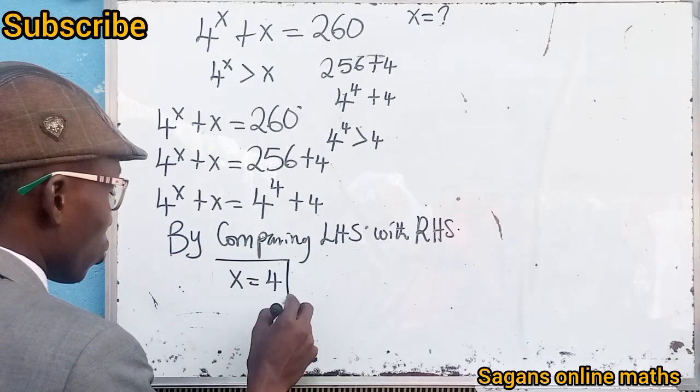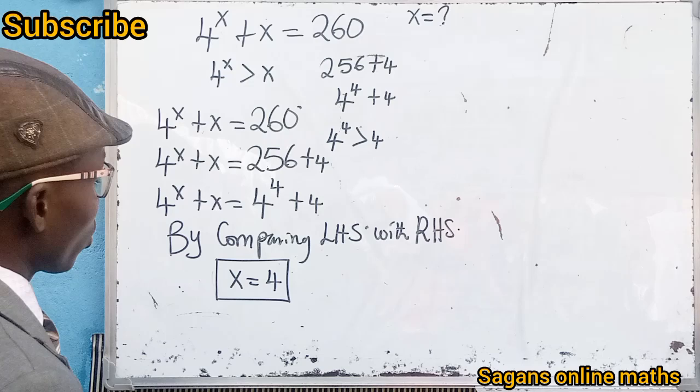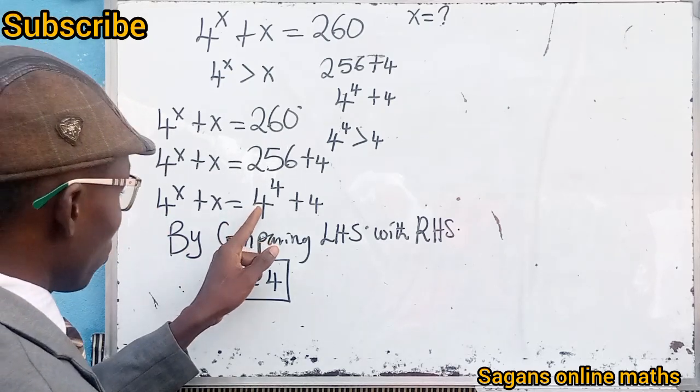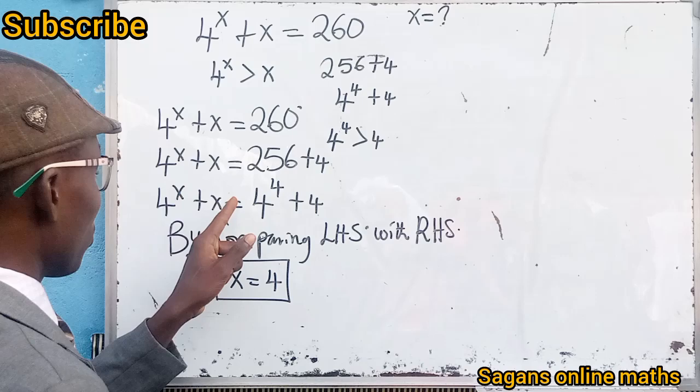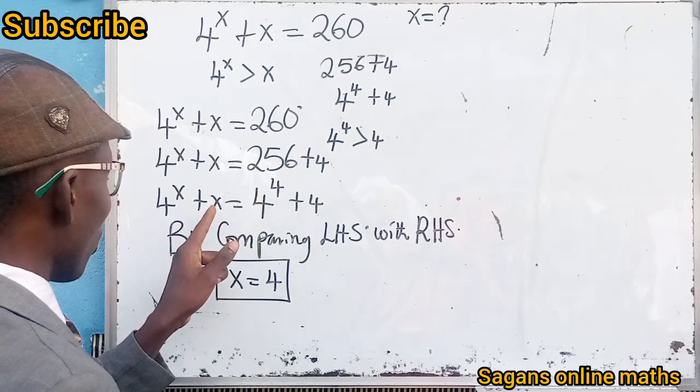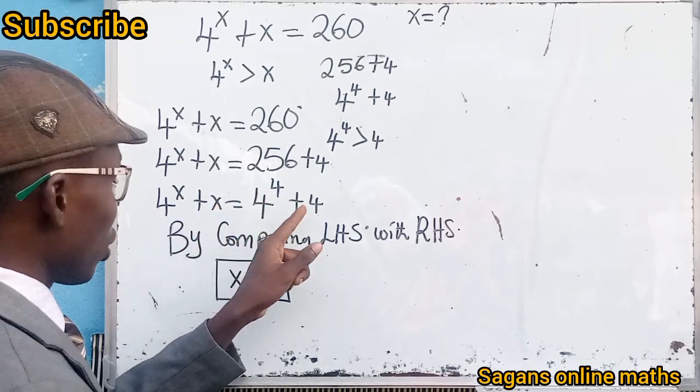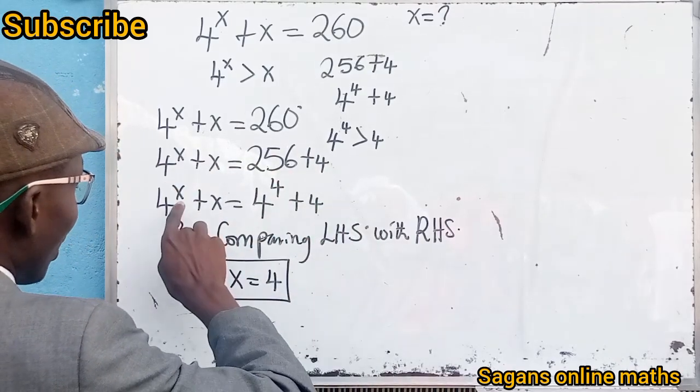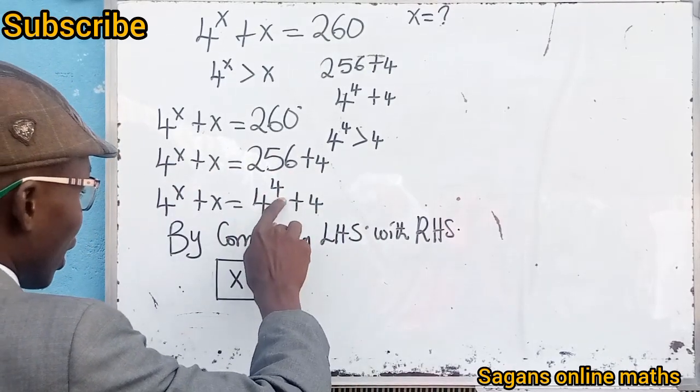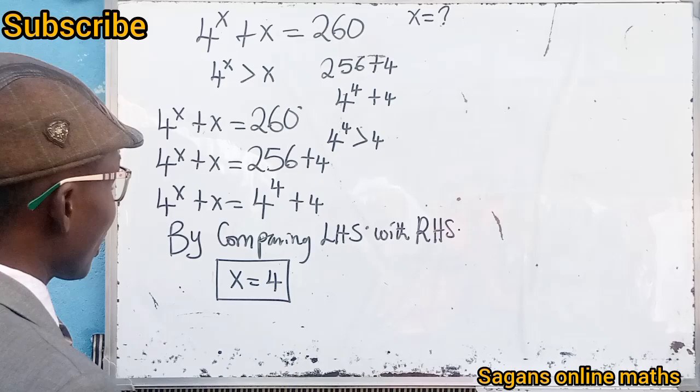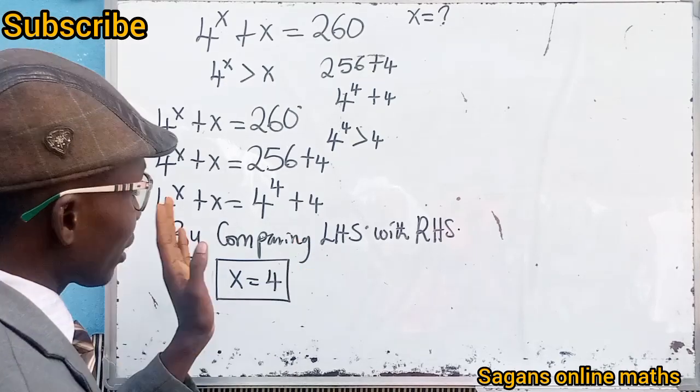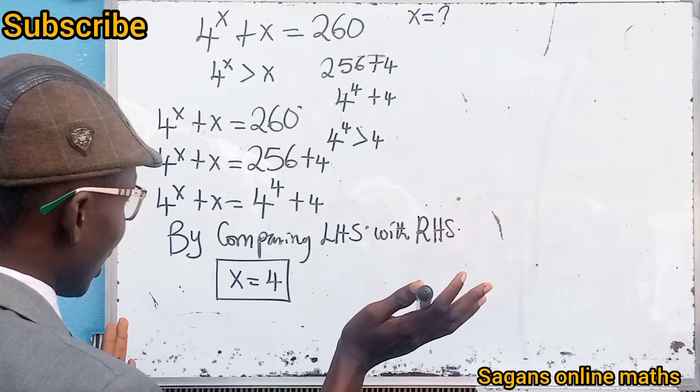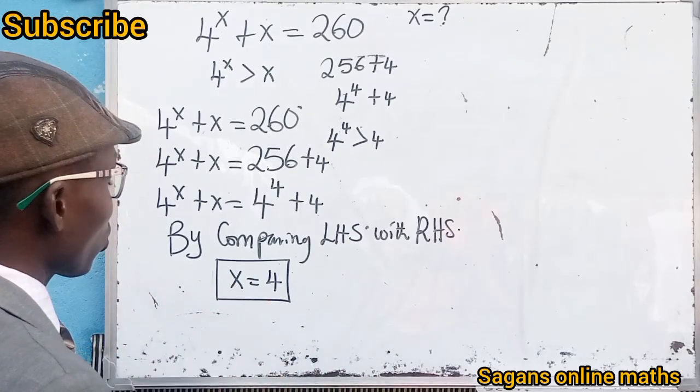Since the base here is 4 and the base here is 4, the exponent here is x and the exponent here is 4. So looking at this problem, you will know that since x appears in the exponent on the left and 4 appears in the exponent on the right, by comparing left-hand side with right-hand side, we know that x equals 4.